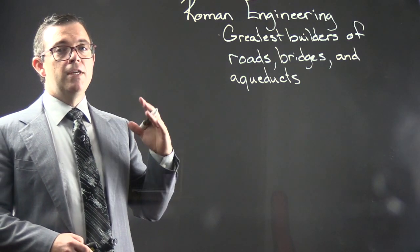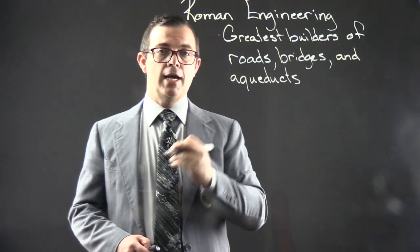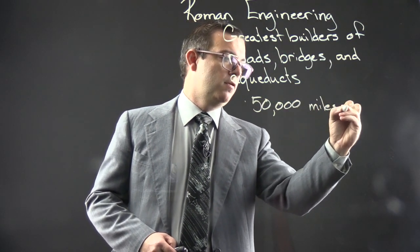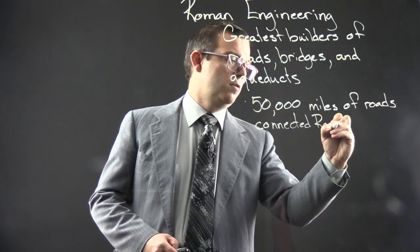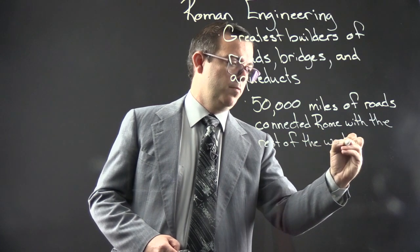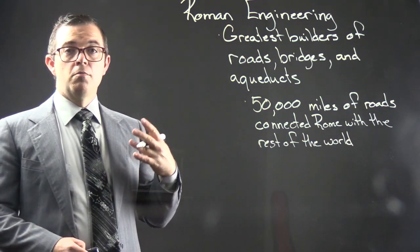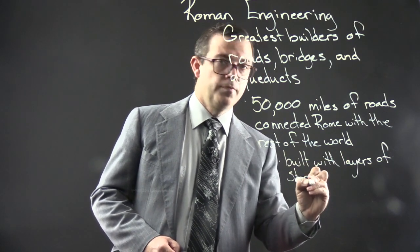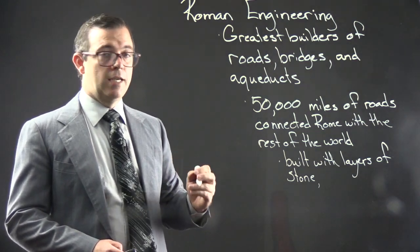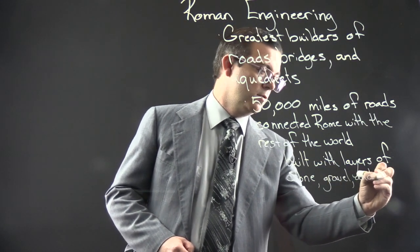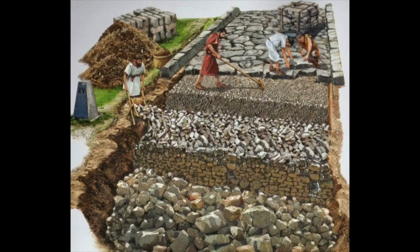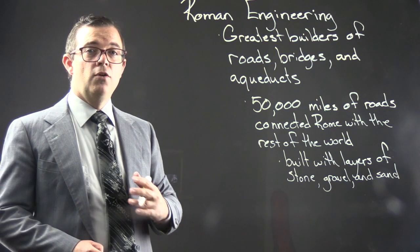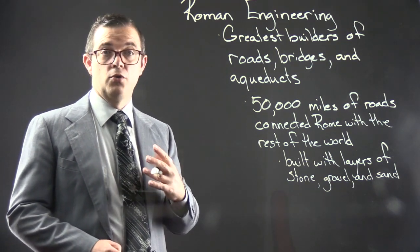More than 50,000 miles of roads connected Rome with the rest of the world. Roads were built with layers of stone, gravel, and sand. This was a standard for road construction for nearly 2,000 years.